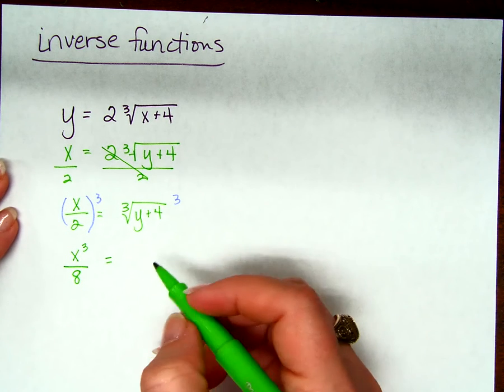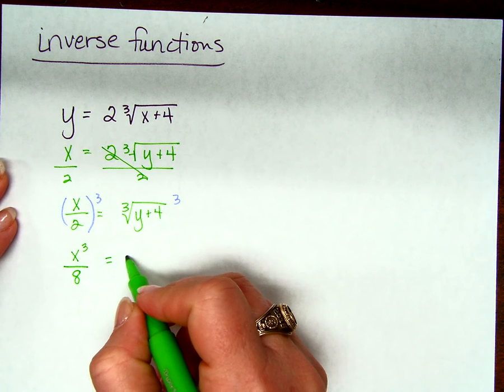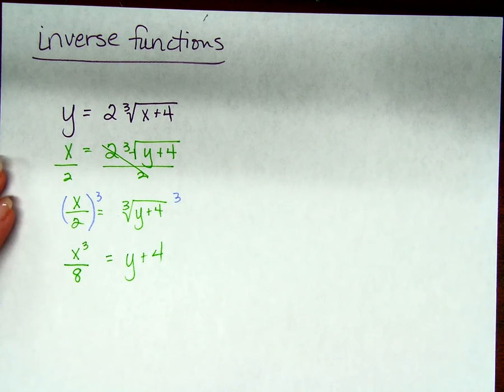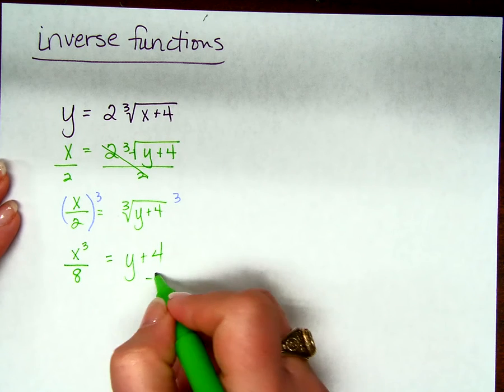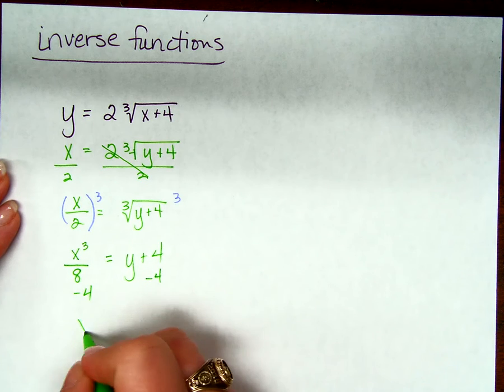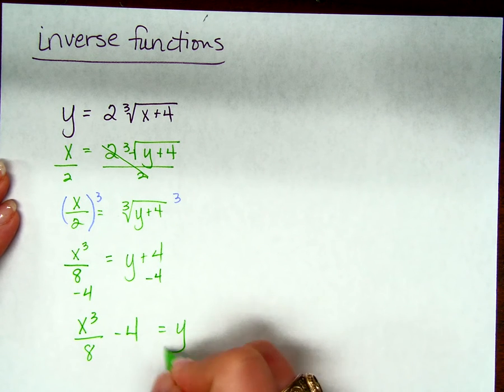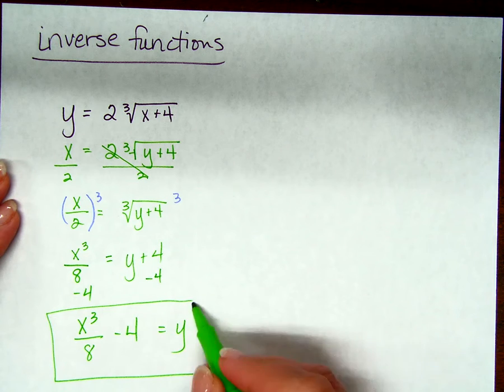And on the right hand side, what do we end up with? y plus 4, good. So all we have left to do to solve for y is? Subtract 4 from both sides. x to the 3rd over 8 minus 4 equals y. That is our inverse.